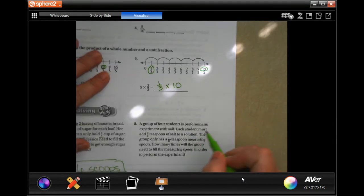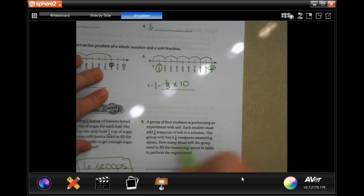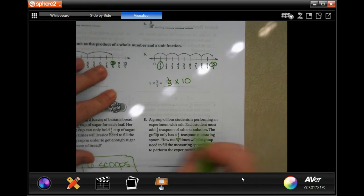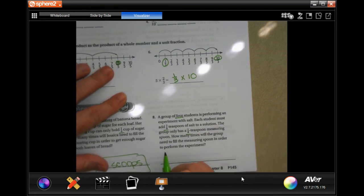All right, a group of four students is performing an experiment with salt. Each student must add three eighths of a teaspoon of salt to the solution, but the group only has a one eighth teaspoon. How many times will the group need to fill the measuring spoon? Well, there's four students, so we need to do three eighths four times.